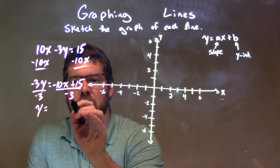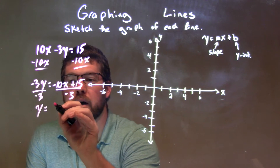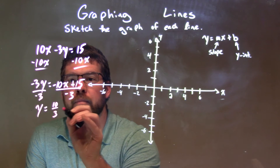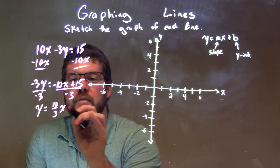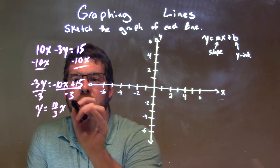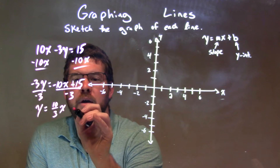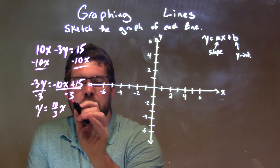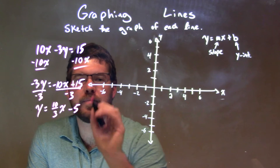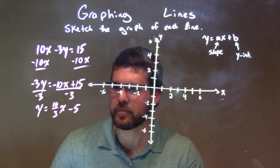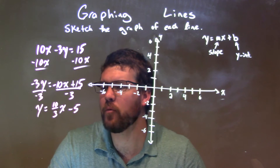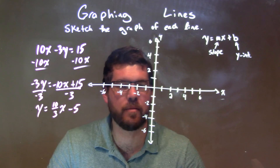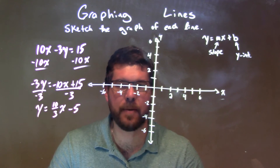Negative 10 divided by negative 3 is a positive 10 thirds. We have x here — negative divided by negative is a positive. And then 15 divided by negative 3, that's a negative 5. So we have y equals 10 thirds x minus 5.